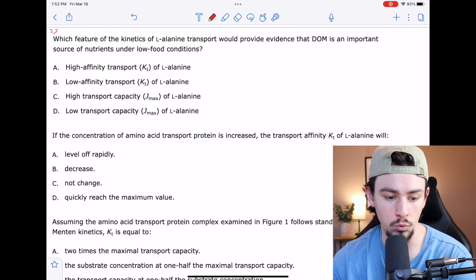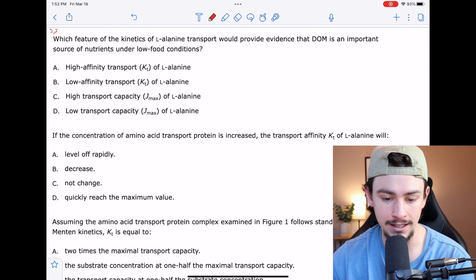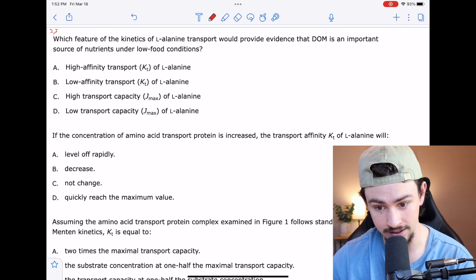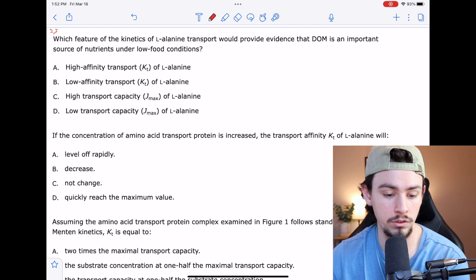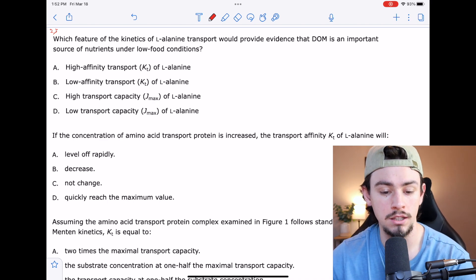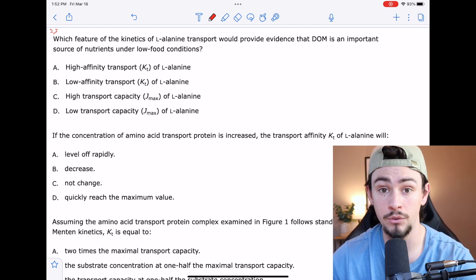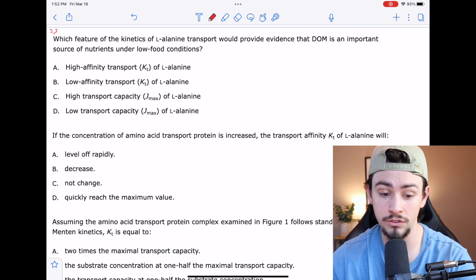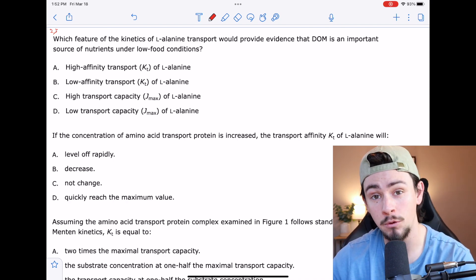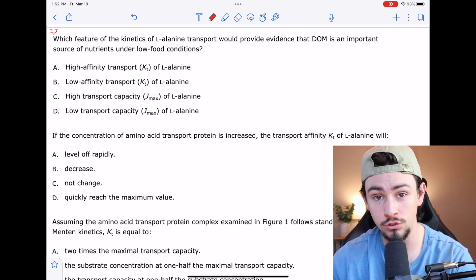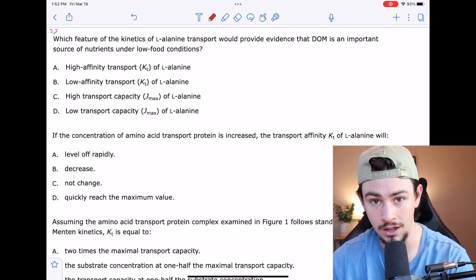Let's take a look at these questions. Number 23 says, which feature of the kinetics of L-alanine transport would provide evidence that DOM is an important source of nutrients under low food condition? If I'm going to rephrase that, I'm going to say, which of these metrics shows me that I will still be able to get nutrients from this source, even when there's not a lot of it.